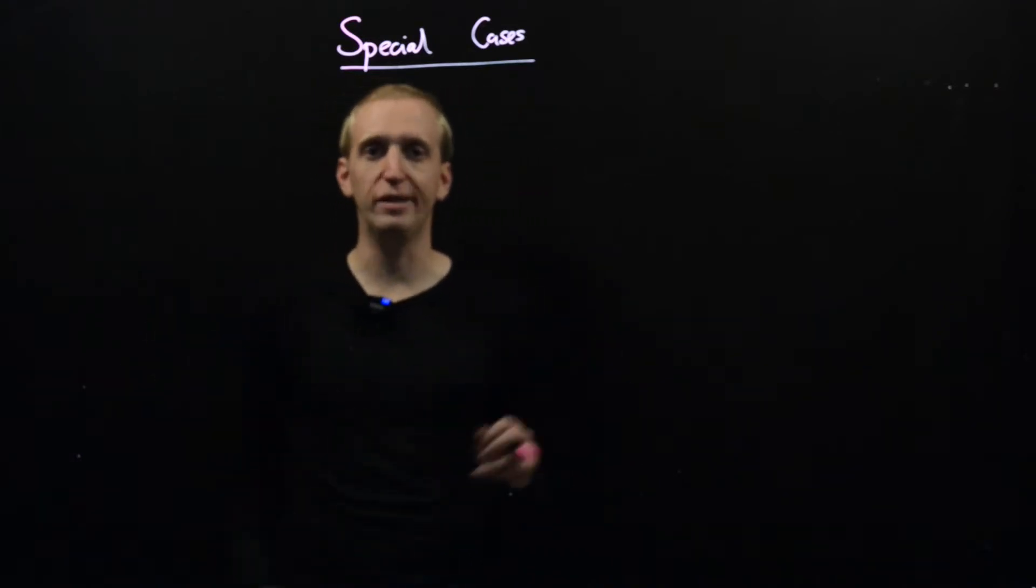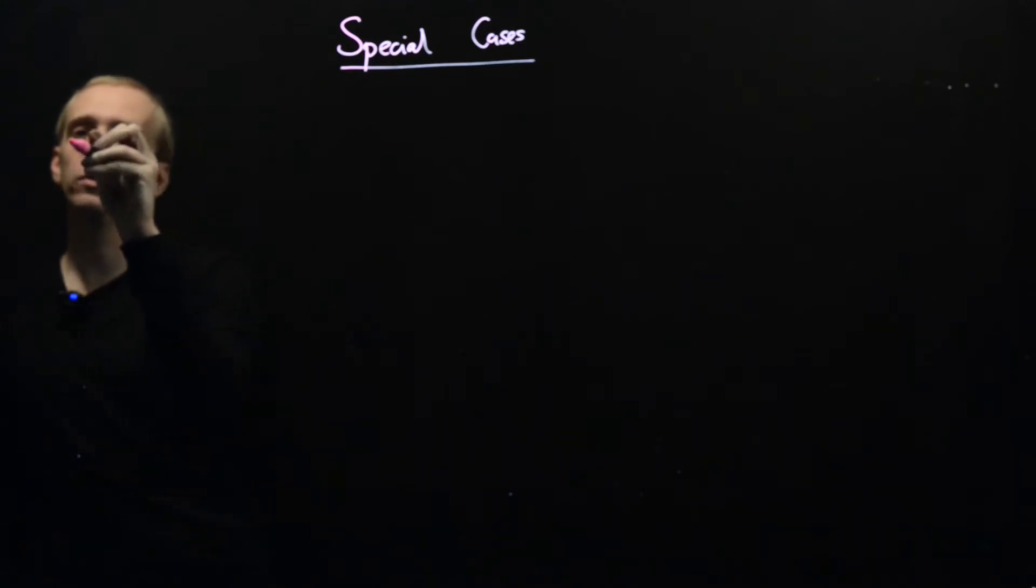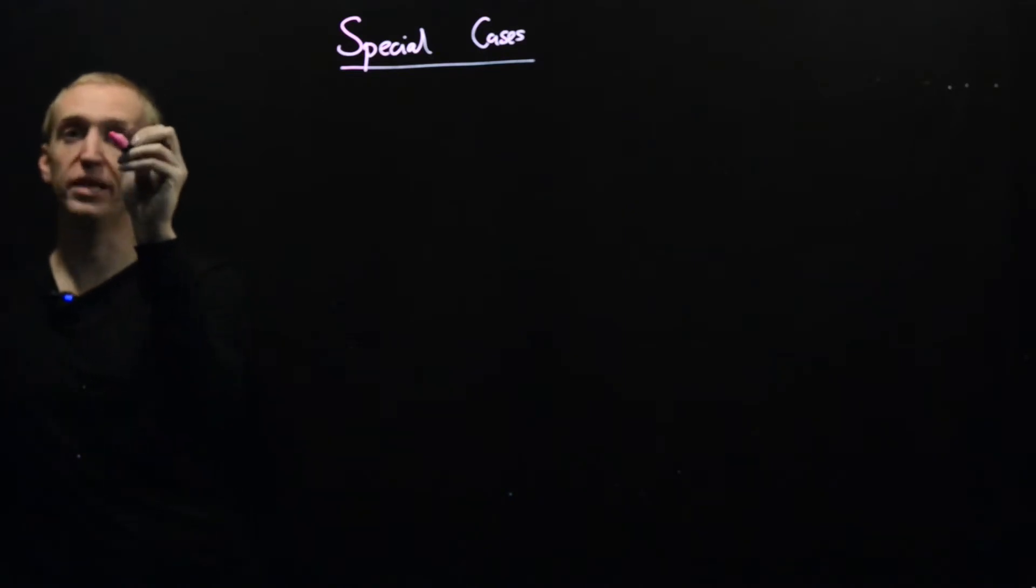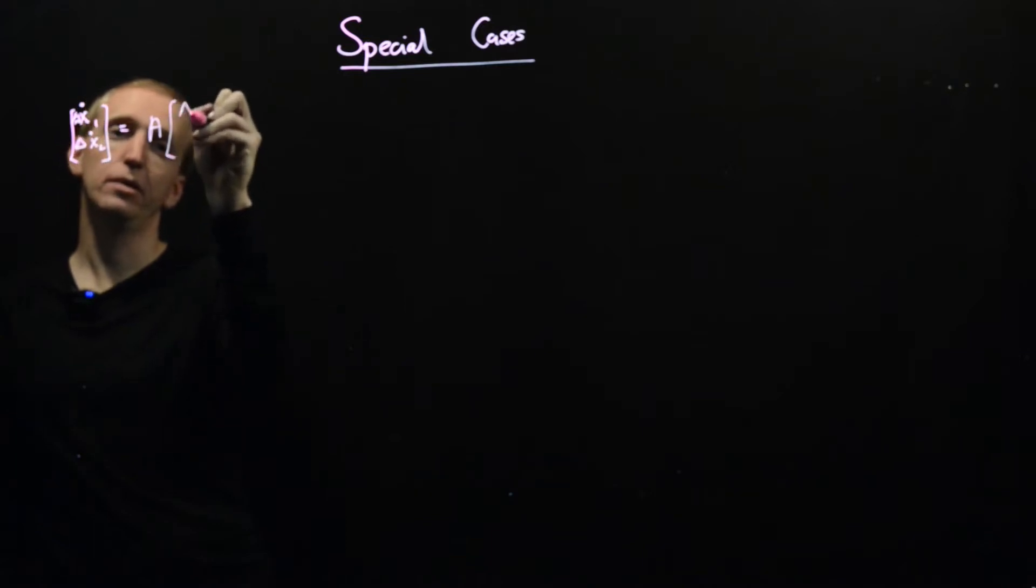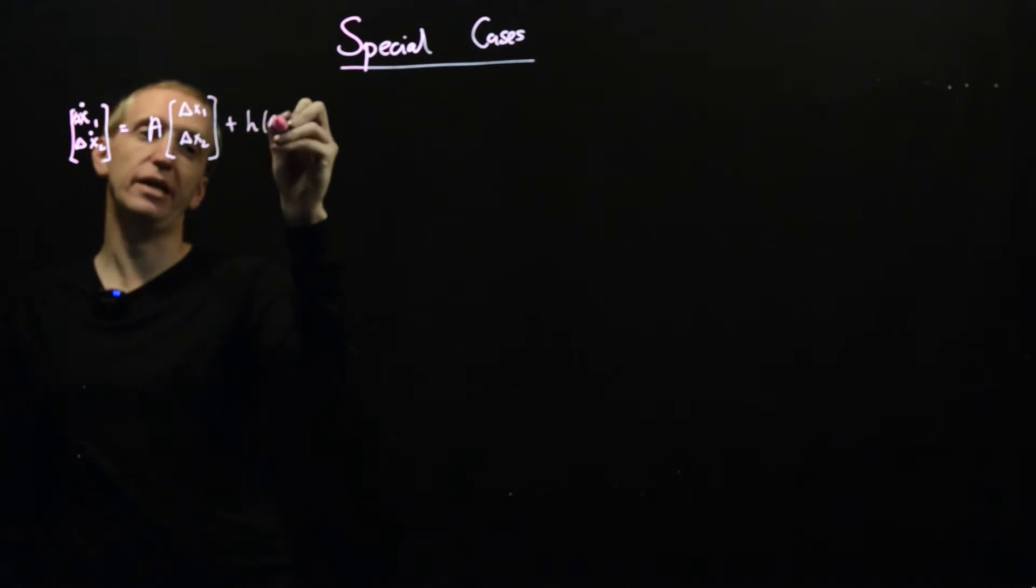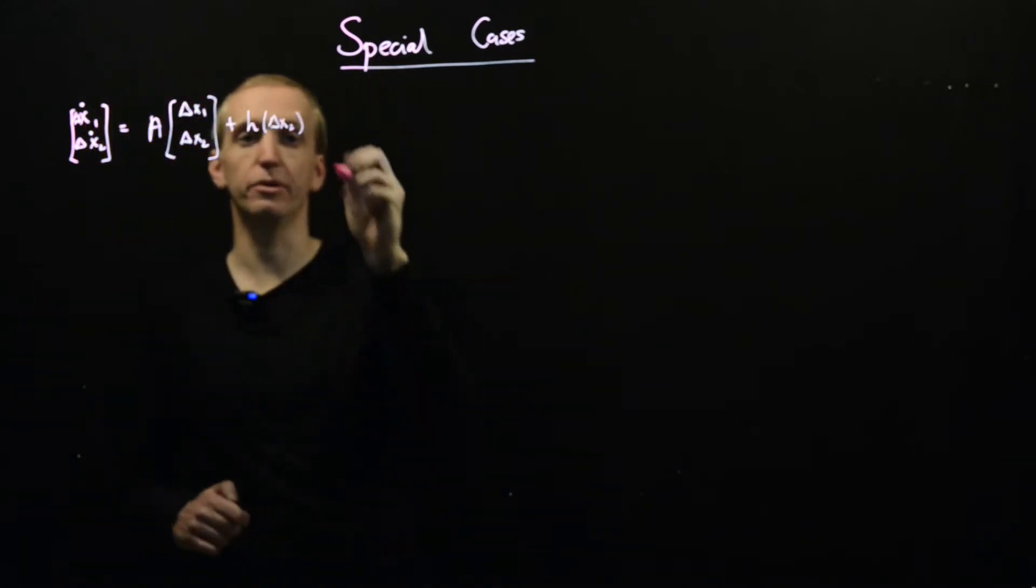But let's just quickly recap what we've discovered so far. So we've argued that for 2D systems about equilibrium points, we can approximate the solution with linearization. So we can have this delta x1 dot delta x2 dot is equal to some matrix A delta x1 delta x2 plus some extra stuff here that gets small as delta x gets very small.